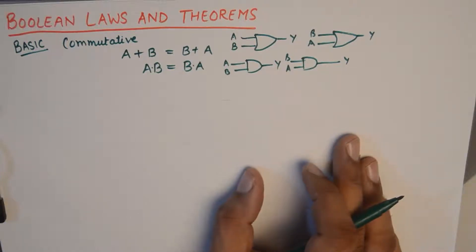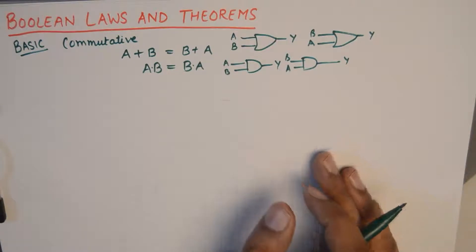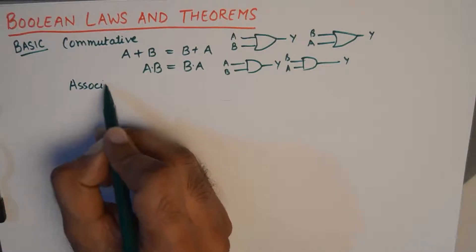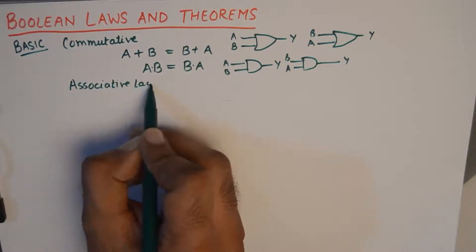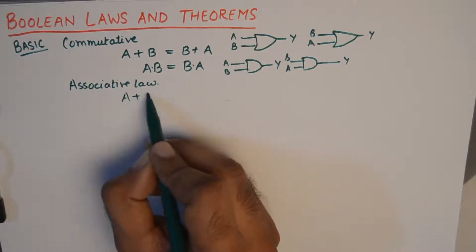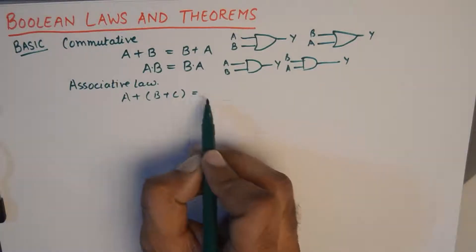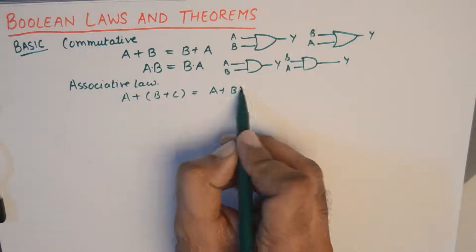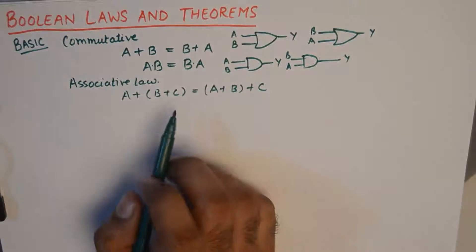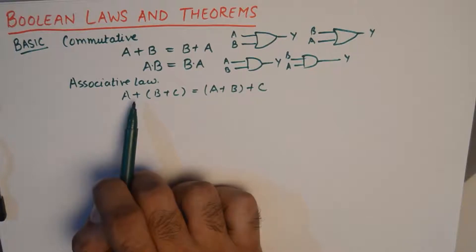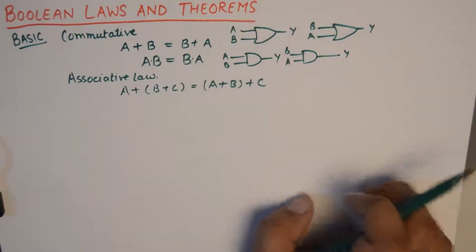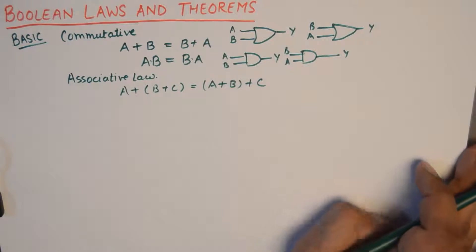And after commutative law we have a second basic law which is known as associative law. Now this law states that A plus B plus C in parenthesis is equivalent to A plus B in parenthesis plus C. Or in other words, B plus C are given as input to an OR gate and then A is added to them or ORed to them. And in the second case A plus B is ORed first and then C is ORed. So it does not make any difference.